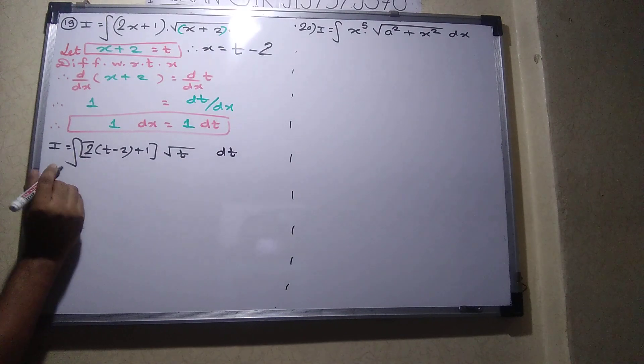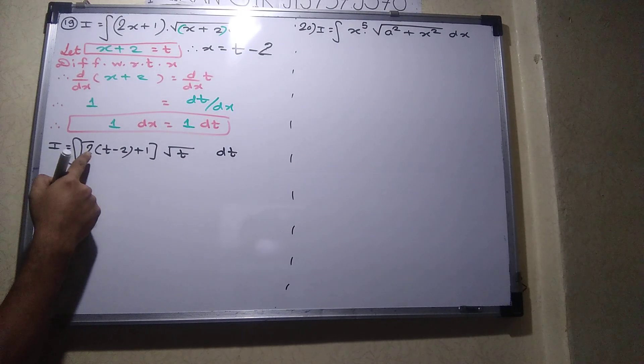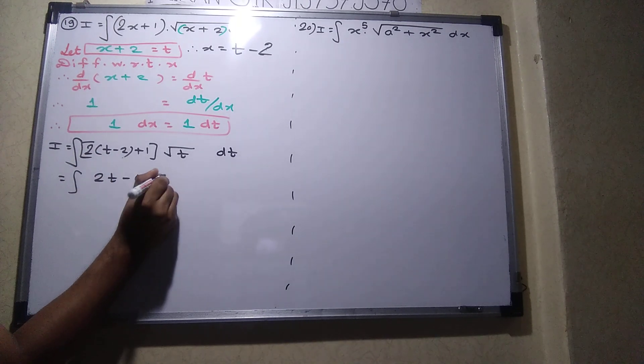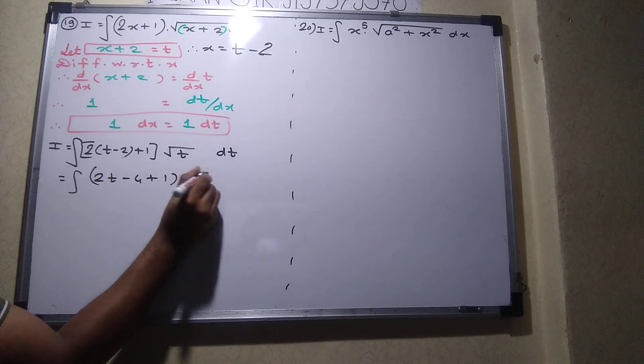Now we will multiply this root T. 2 into t, 2 T. 2 root of 4 plus 1. Bracket of root T.